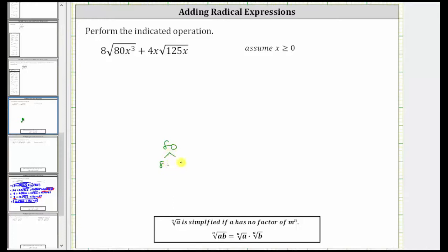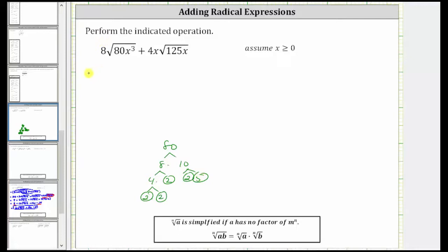80 is equal to eight times 10. Eight is equal to four times two. Two is prime, and four is equal to two times two. And 10 is equal to two times five. So 80 is equal to four factors of two and a factor of five.